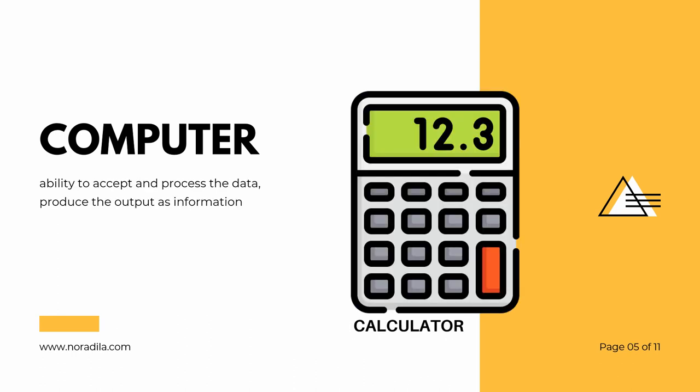A computer has the ability to accept data, which is referred to as input, process the data, and produce the output as information. An example of a computer device is a calculator, which can solve multiple types of mathematical operations where the device will process the numbers that have been pressed and display the result accordingly.